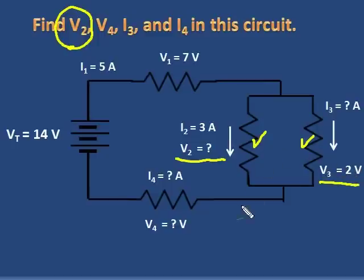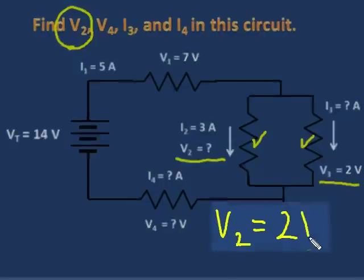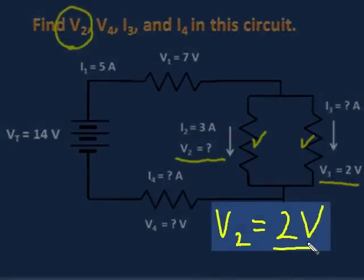If V3 is two volts, V2 must be two volts. We don't have to calculate anything. We just look at it and know that resistors in parallel have the same voltage drop.